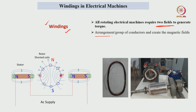Windings are nothing but an arrangement or group of conductors. For example, in an induction motor, the stator has a distributed winding and the rotor has a squirrel cage winding. Because of the distributed winding at the stator side with AC supply and the squirrel cage rotor, based upon mutual induction, current is induced in the squirrel cage and another magnetic field is established at the rotor side. The attractions and repulsions of these two magnetic fields make the machine work.